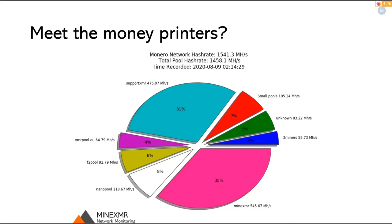Who are the actual money printers in Monero? Those are the miners. Here is a chart showing who the miners are. Mine XMR and Support XMR are the two dominant pools on the Monero network, with others like XMR Pool, F2 Pool, Nano Pool, small pools totaling about 7% of the network, and 5% unknown. The unknown portion includes solo miners and private pools — hash rate from people who might not share information publicly or who care about mining privately.